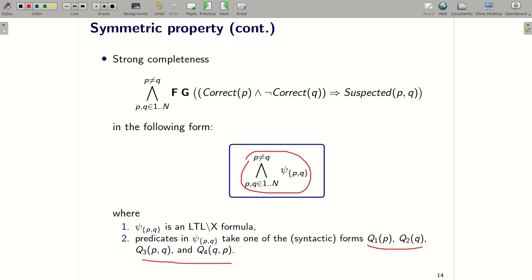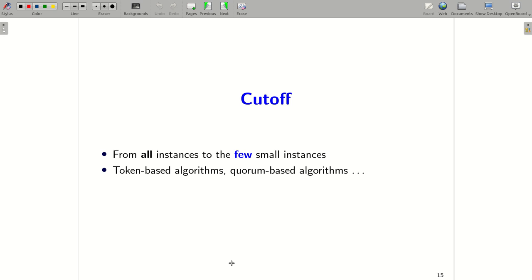So now I would like to discuss the cutoff property. Why is this property interesting? The reason is that if an algorithm enjoys the cutoff property, then instead of checking all instances, we need to focus only on a few small instances. This tactic has been used to verify many algorithms. For example, token-based algorithms or quorum-based algorithms.